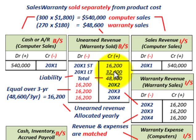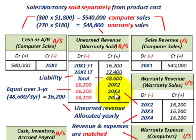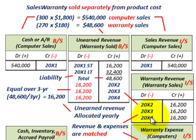To earn these warranties, we use the straight-line method — an equal amount over the 3-year warranty period. $48,600 divided by 3 years equals $16,200 per year. Each year from 20x2 through 20x4, we debit unearned revenue for $16,200 and credit warranty revenue on the income statement for $16,200. So the unearned revenue is allocated yearly as warranty revenue.